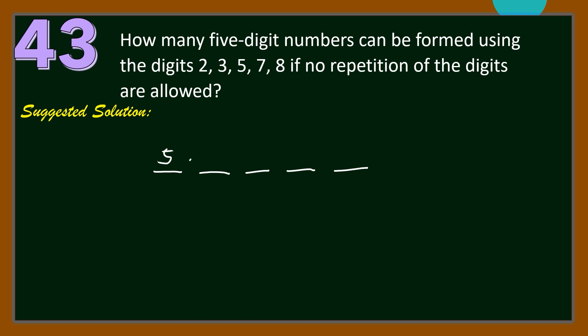No repetition is allowed. So if we have chosen one digit, we cannot use it for the 2nd digit. Then we have only 4 choices for the 2nd digit, 3 choices for the 3rd, 2 choices for the 4th, and only 1 choice for the 5th digit. This is equal to 5 times 4 times 3 times 2 times 1, which is 120 five-digit numbers.